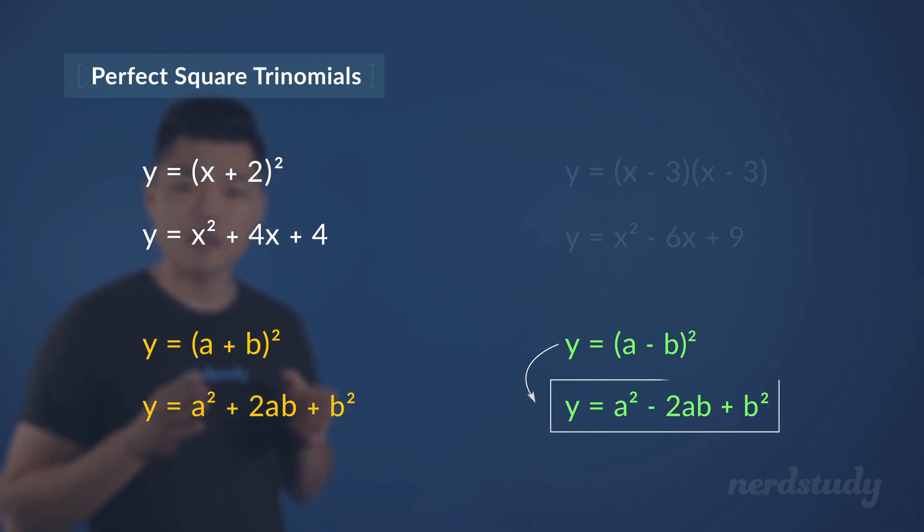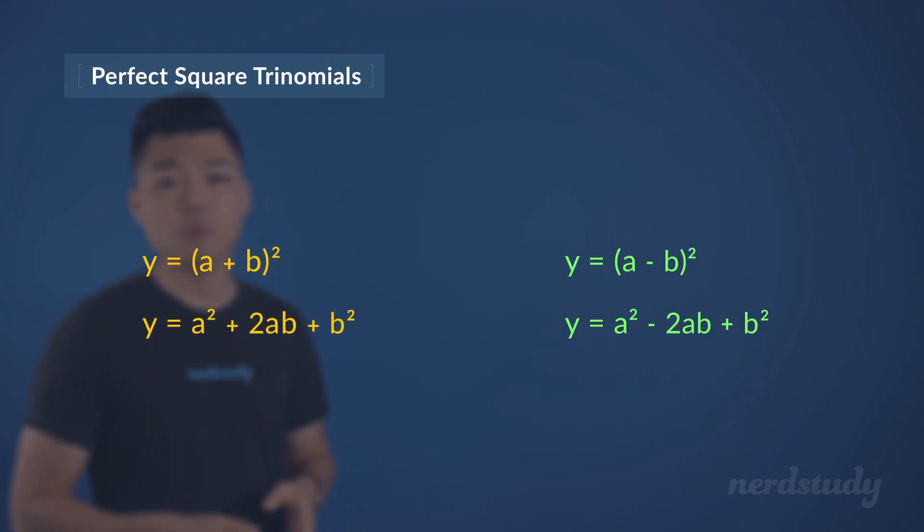we would end up with this equation. So, all we have to remember is that when the same binomial is being multiplied by itself in our quadratic equation, the equation we will end up with will be either in this form or this form,